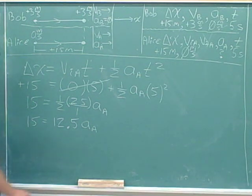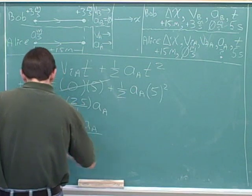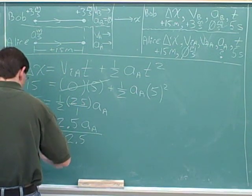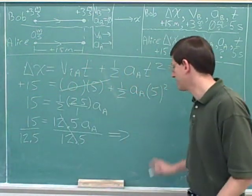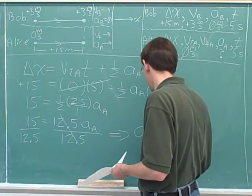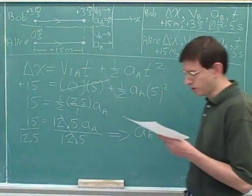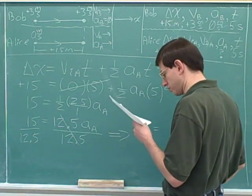Now, the 12.5 is being multiplied times the acceleration, so we need to do the opposite. We need to divide by 12.5. We need to do that to both sides. We can use our calculator to do 15 divided by 12.5. 15 divided by 12.5 comes out to be 1.2, or thereabouts.